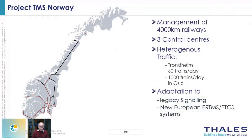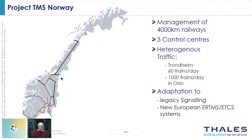In Norway, the customer wants to renew the whole network and have a TMS for it. The network has about 4,000 km of railway, and TMS shall finally control traffic in the whole country using three different control centers, with exactly those objectives from global to local operation as described on the previous slide.